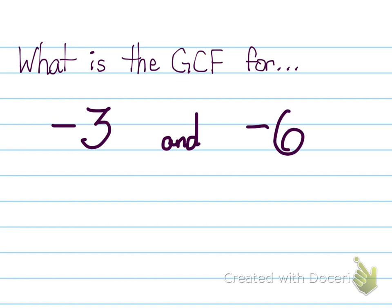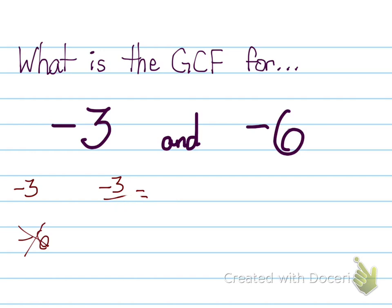Let's look at another example. Between negative three and negative six, what is the largest number that can divide into both of them? Well, we know that negative three can divide into both of them. If you're thinking negative six, that cannot be the case — if you take negative three divided by negative six that equals 0.5, which is a decimal, so it doesn't divide evenly. But negative three divided by negative three is one — no decimal. And negative six divided by negative three gives me two — no decimal. So therefore my GCF is negative three.